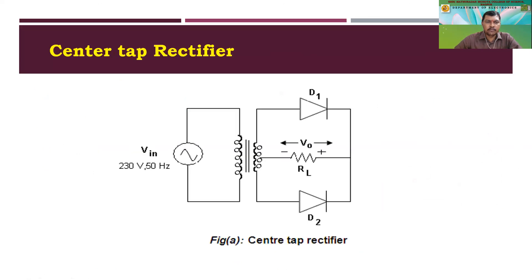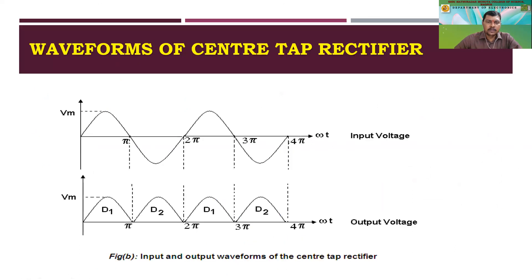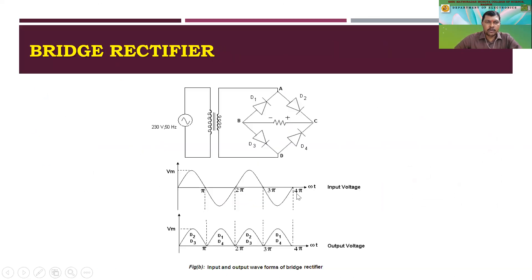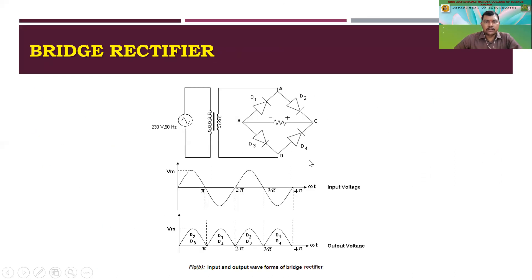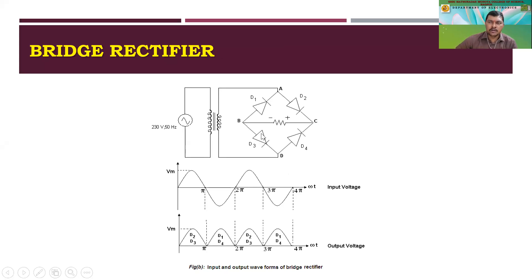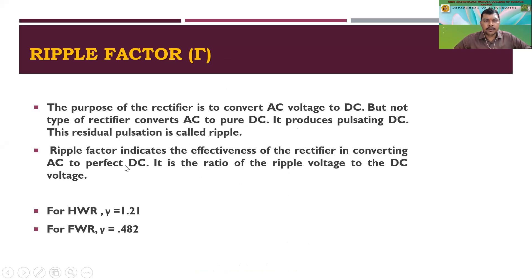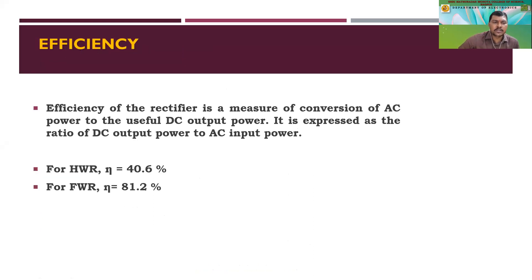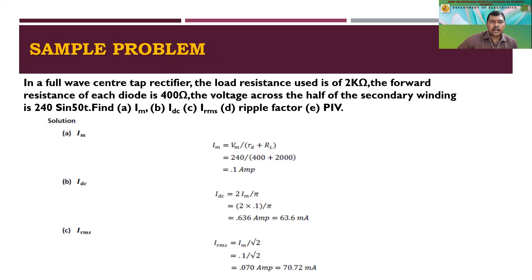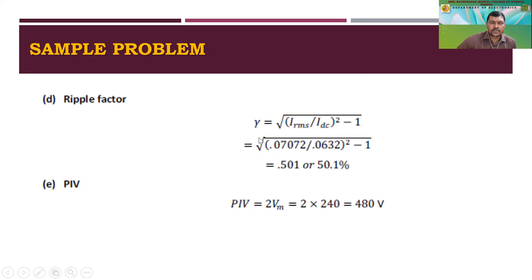To summarize: we have two types of full wave rectifier — the center tap rectifier and the bridge rectifier. In the center tap full wave rectifier, two diodes are present and they conduct alternately, giving full wave output. In the bridge rectifier, two diodes work at a time while the other two remain in reverse bias, acting as open switches, and we still get full wave output. PIV for the bridge rectifier is Vm; ripple factor for half wave is 1.21 and for full wave is 0.482; efficiency is 81.2% for full wave.